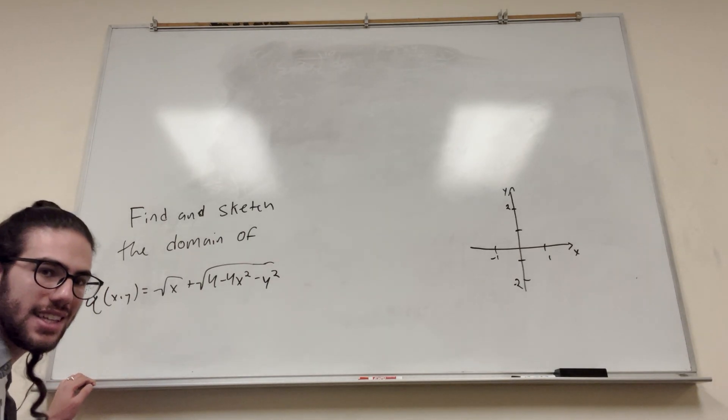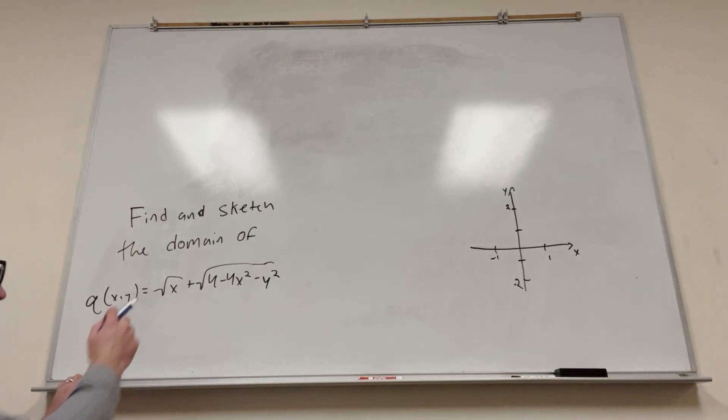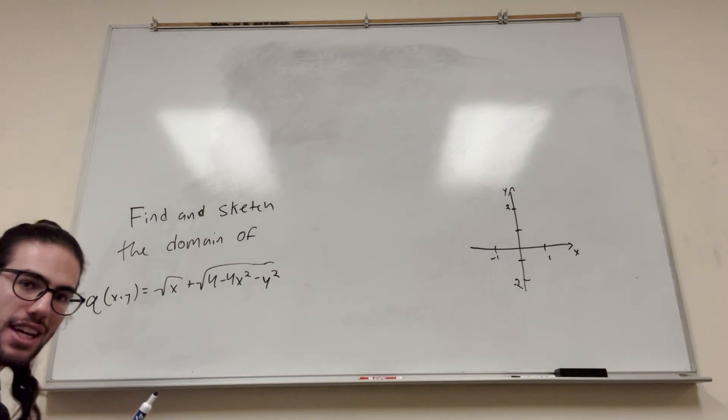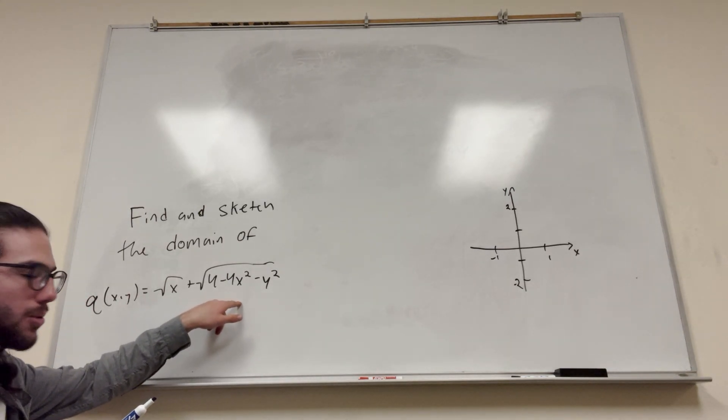Therefore, you can say that this has to be greater than or equal to zero. This whole function does, but more specifically, each part, each square root has to be greater than or equal to zero. So let's write that.